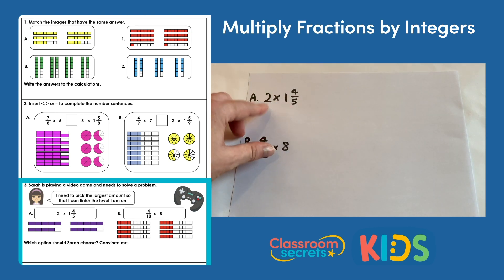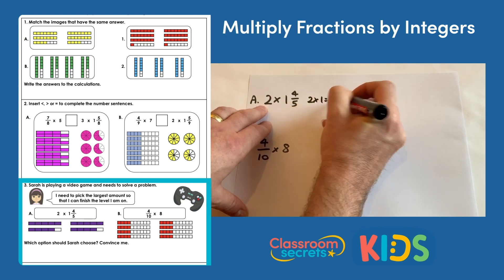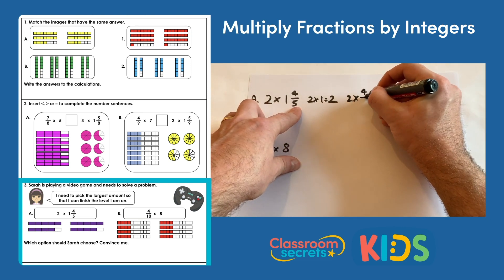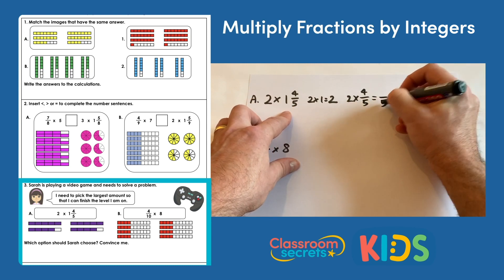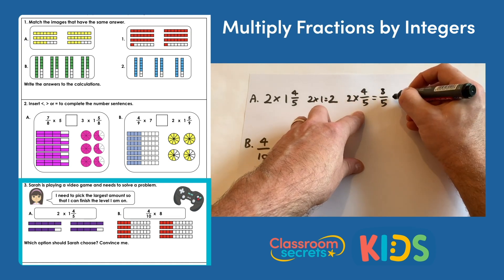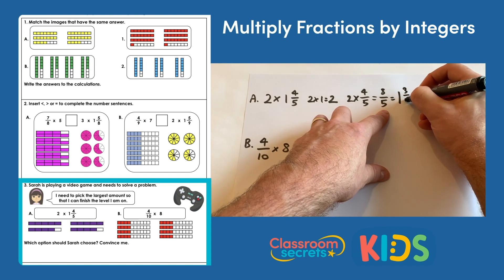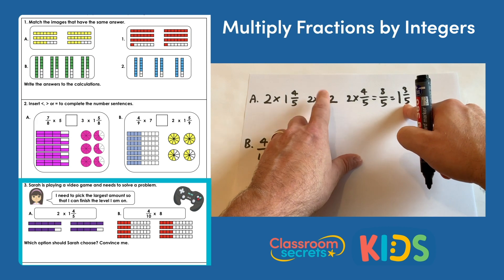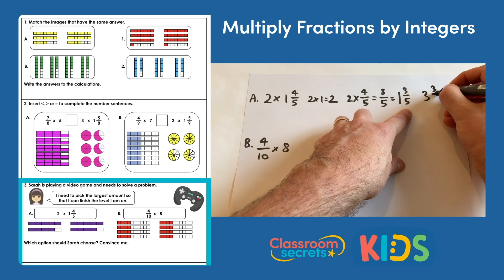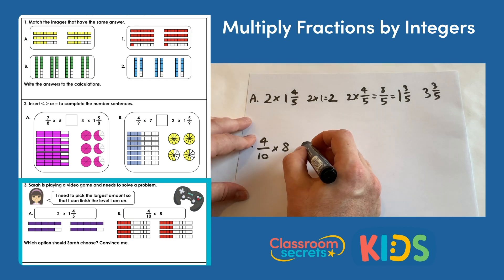For two multiplied by one and four fifths, multiply the whole numbers: two multiplied by one is two. Then multiply the fraction: two lots of four fifths, so two multiplied by four is eight fifths. Eight fifths is an improper fraction, converting to a mixed number gives one and three fifths. Adding to the whole number: two add one and three fifths gives three and three fifths.